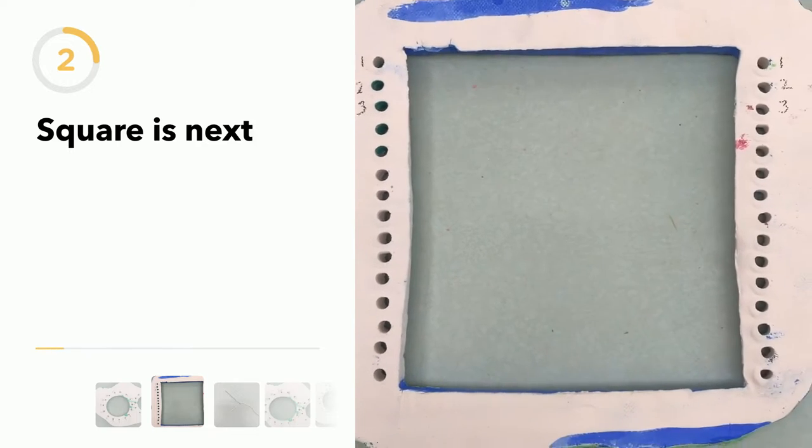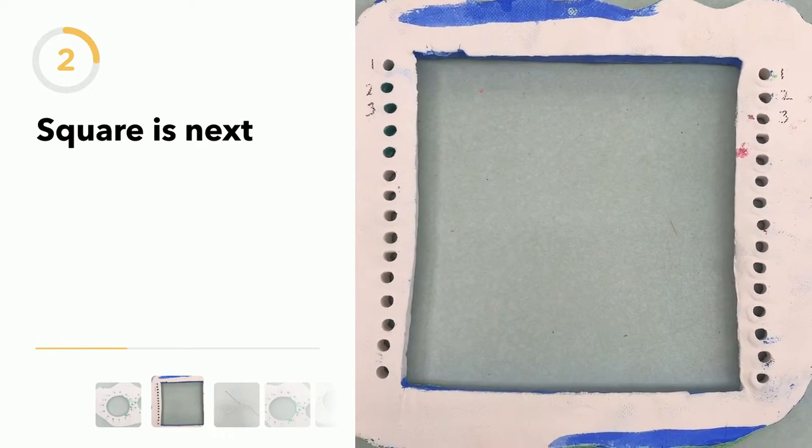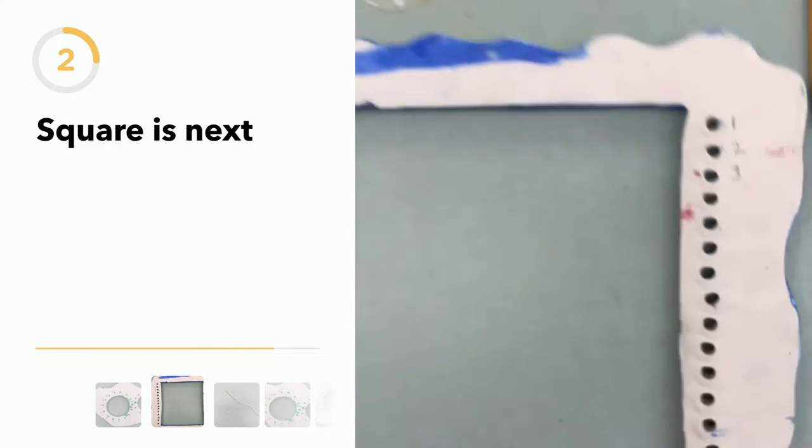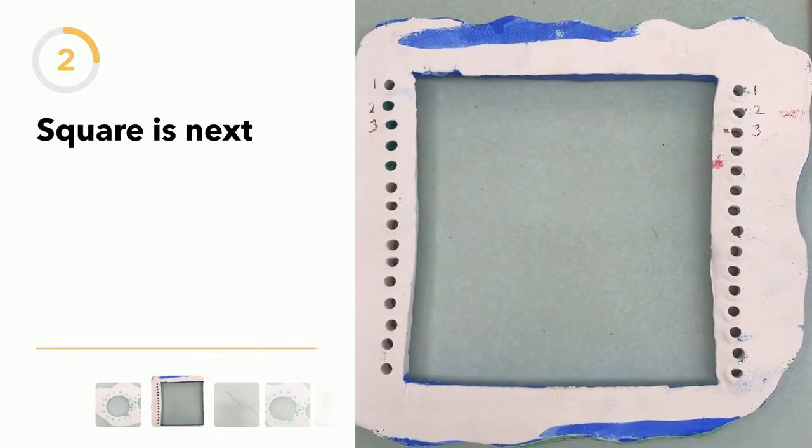If you have a rectangle or a square in the middle, you can just label all the way down the same: one, two, three, one, two, three, so you don't get confused.